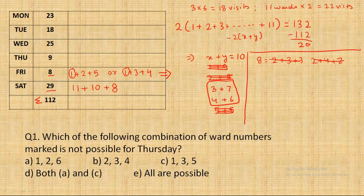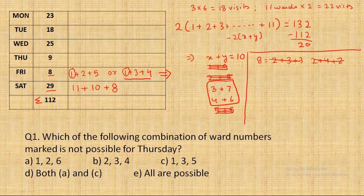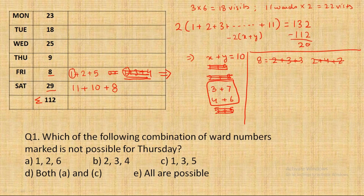Second important finding: if we consider 1+3+4 as Friday's combination, that would mean both ward 3 and ward 4 were visited. But if both 3 and 4 are visited, neither pair (3+7 nor 4+6) can be the unvisited pair — which contradicts our requirement. So 1+3+4 cannot be Friday's combination under any circumstance. This means one of 3 or 4 must be the unvisited ward, and the valid Friday combination is 1+2+5.